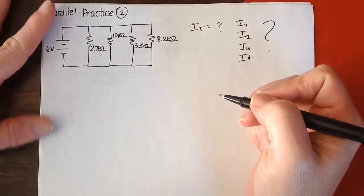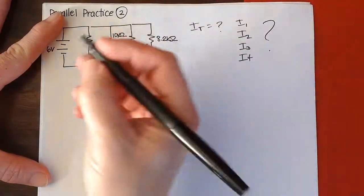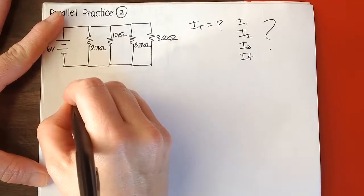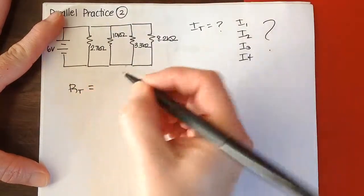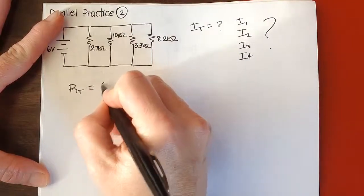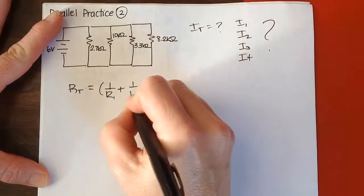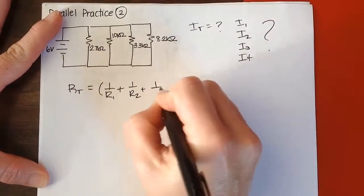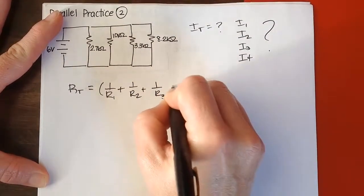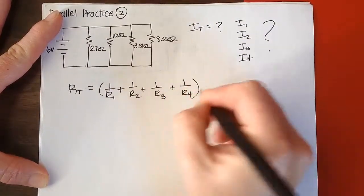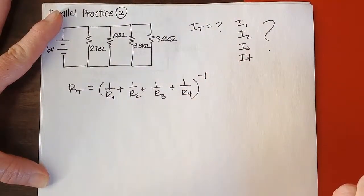So to find the equivalent resistance, remember that the total resistance, or the equivalent resistance, would be equal to 1 over R1, plus 1 over R2, plus 1 over R3, plus 1 over R4, all of that to the negative 1.